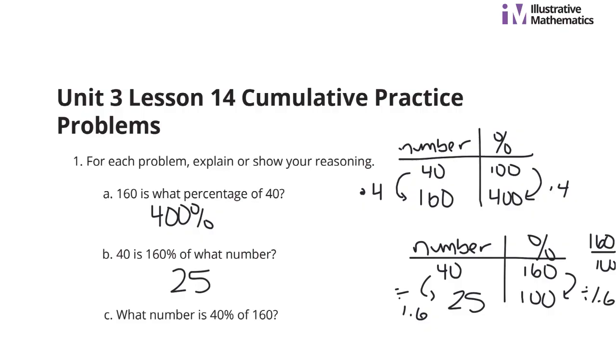And lastly, what number is 40% of 160? Once again, we have our number and our percent. What number is 40% of 160? Well, 160 is our number. That's our 100% total. And what number is 40%? To get from 100 to 40, we're dividing by 2 1/2, as 100 divided by 40 is 2 1/2.